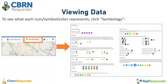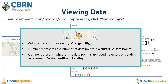To see what each icon, symbol, and color represents, you can click Symbology at the top of the map and it will provide you with a key so you can understand what you're actually viewing. For example, this orange circle with a 2 in it — the color represents the severity, so orange equals high. The number represents the number of data points in that cluster, so there are two data points. The outline represents whether the data point is approved, rejected, or pending assessment. Since I'm seeing a dashed outline, this means the data points are pending assessment.